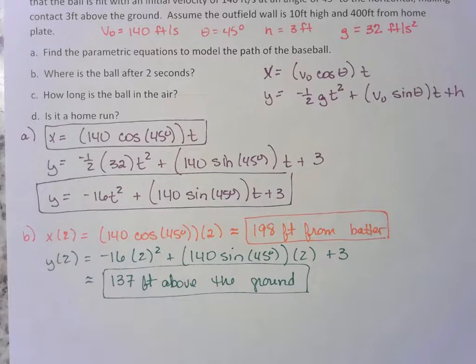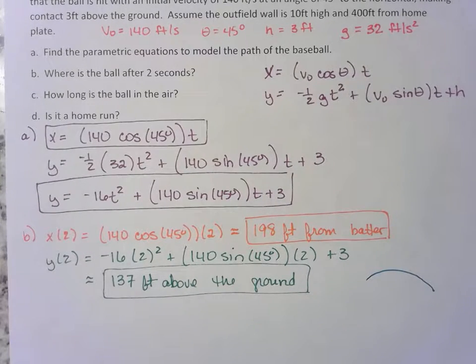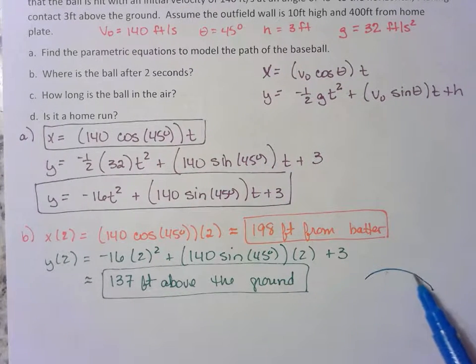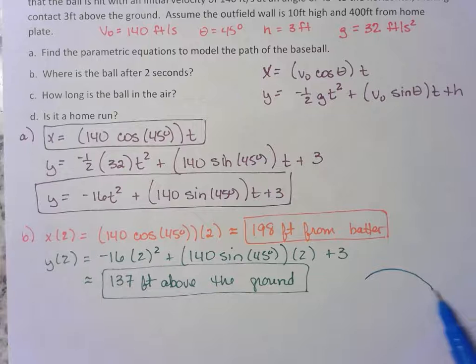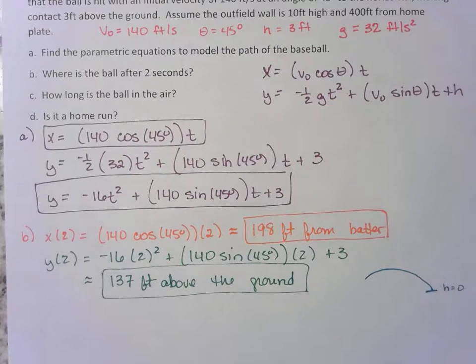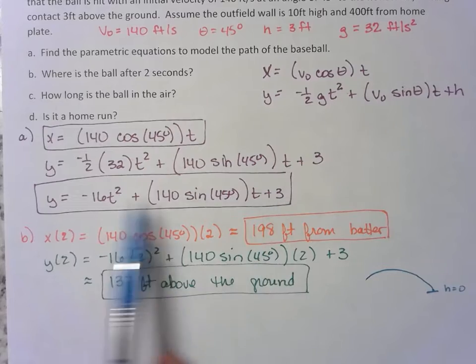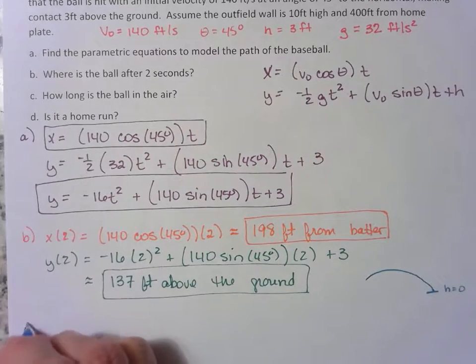So that's where the ball is after two seconds. Part c says, how long is the ball in the air? Remember, the ball is going to be doing this shape, right? Something like that. So how long is this ball in the air? Well, when it hits the ground, isn't that where the height is zero? Right here, height is zero. Do you agree with that? So that's going to be where the vertical is equal to zero. So for part c, you just let y equal zero.